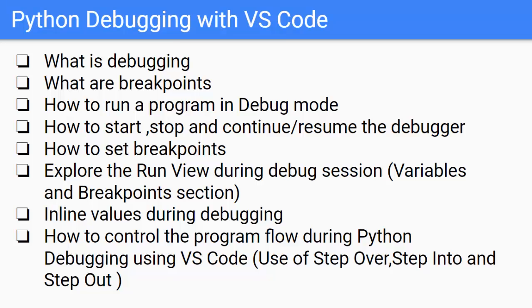The points I am going to cover are: what is debugging, what are breakpoints — these two are fundamental aspects of debugging we need to understand before we do anything. Then we will learn how to run a program in debug mode, how to start, stop, and continue the debugger, how to set breakpoints, explore the run view, the variables and breakpoint section, how to view inline values during debugging, and finally how to control the program flow using step over, step into, and step out.